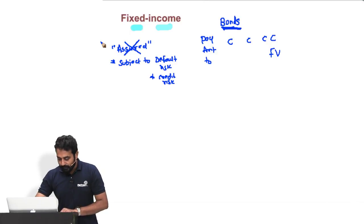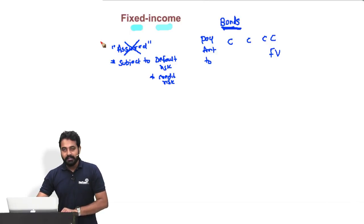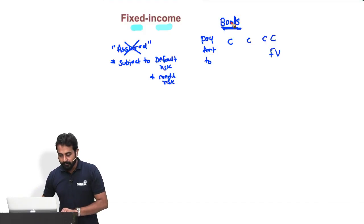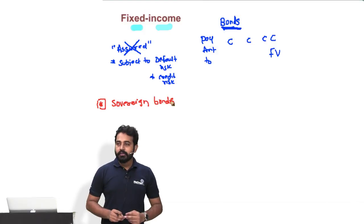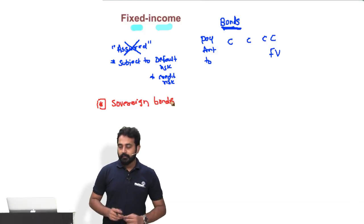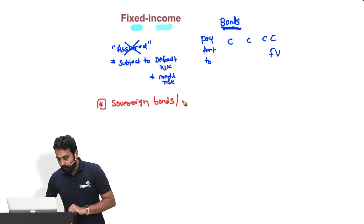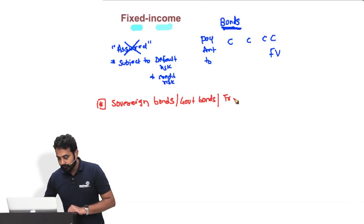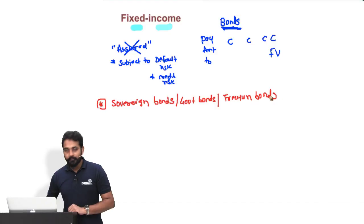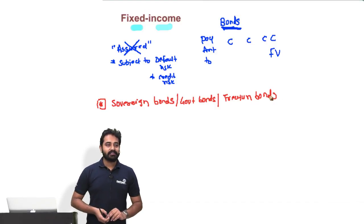Let's discuss the universe of securities under fixed income from an issuer perspective. We will study sovereign bonds — bonds issued by government, also called treasury bonds. Are they safe? Are they risk-free? Yes, that's what we'd like to believe. The textbook says risk-free.